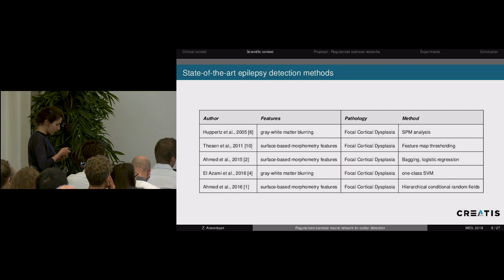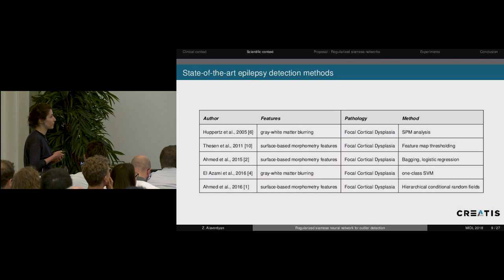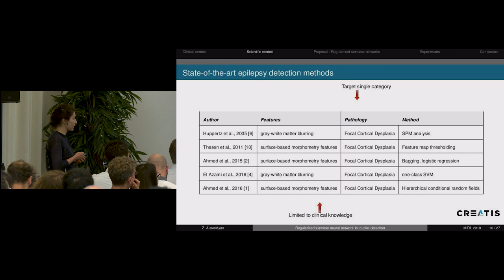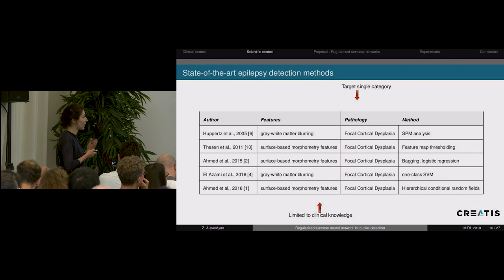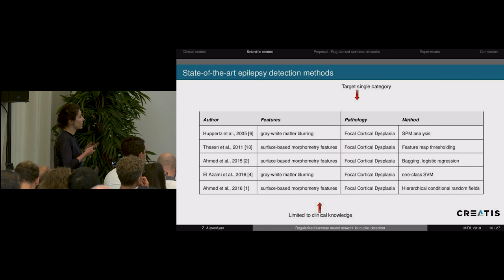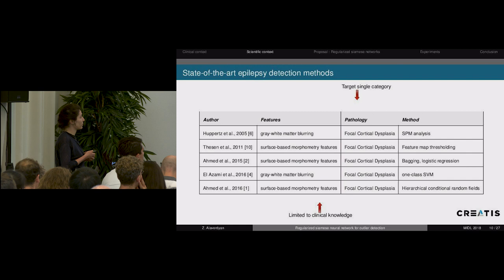When it comes to epilepsy, the current state-of-the-art methods are developed in various settings — some use supervised settings, but more recently semi-supervised and completely unsupervised anomaly detection methods have been developed. The main disadvantage is that they tackle a particular single cause of epilepsy, which is usually focal cortical dysplasia, and the features they use are limited to clinical knowledge for that particular type. What we want to do is extend the range of features considered for epilepsy lesion detection.